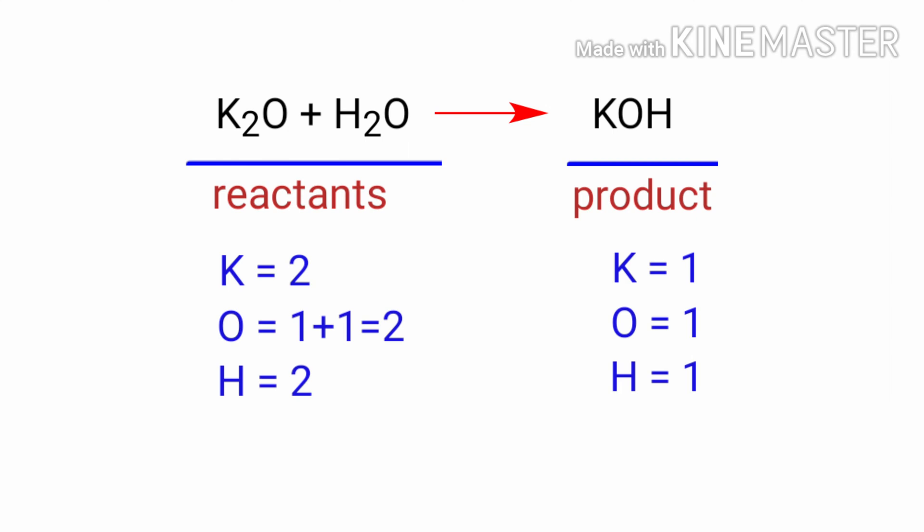In this equation, the number of atoms at the reactants side are double the number of atoms at the product side. So to balance the atoms we need to put a coefficient of two in front of the product.